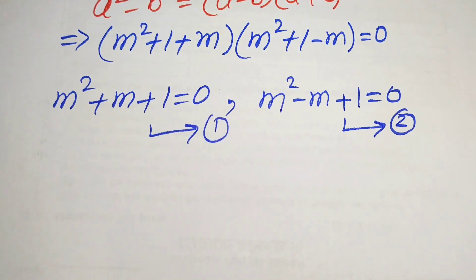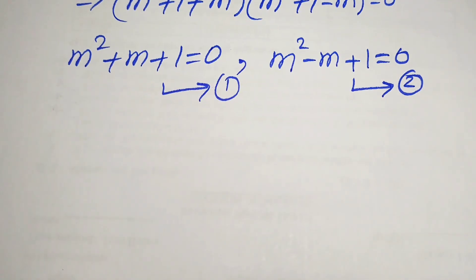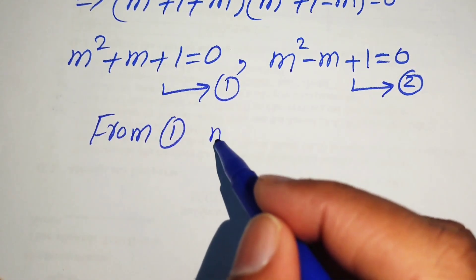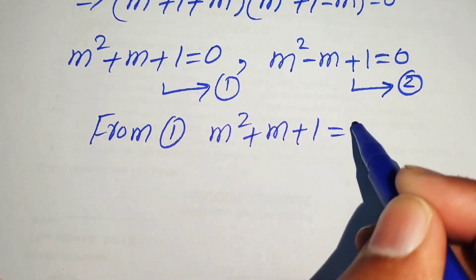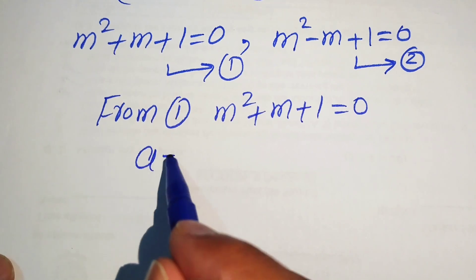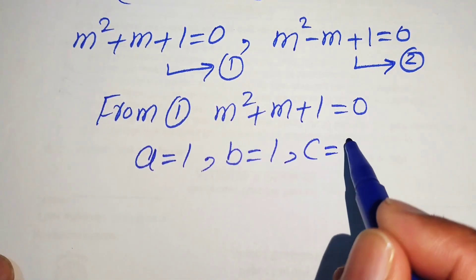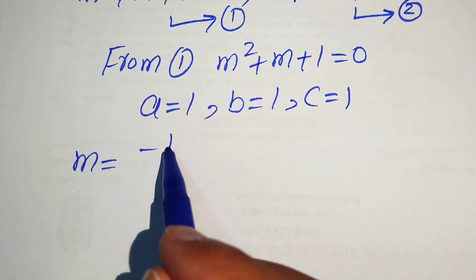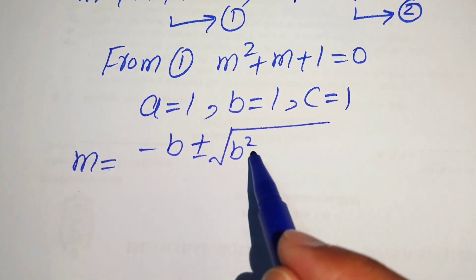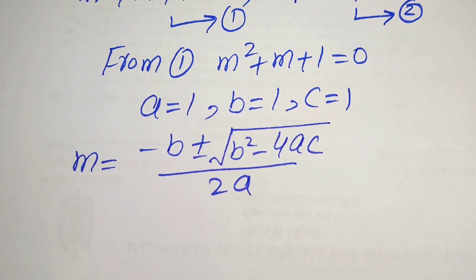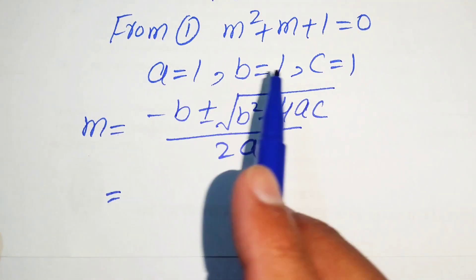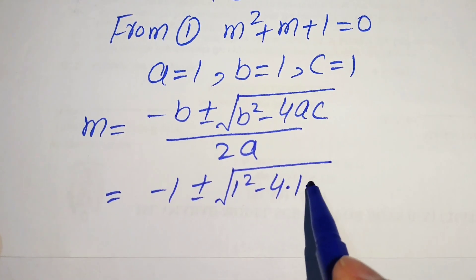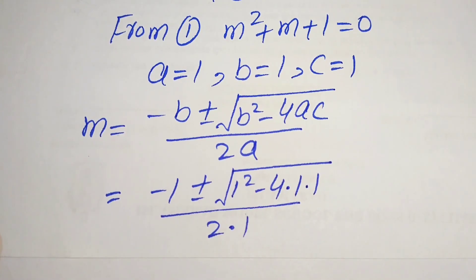For equation 1, m squared plus m plus 1 equals 0, the coefficients are a equals 1, b equals 1, and c equals 1. The quadratic formula is m equals minus b plus or minus square root of b squared minus 4ac, divided by 2a. Substituting, we get minus 1 plus or minus square root of 1 squared minus 4 times 1 times 1, divided by 2 times 1.